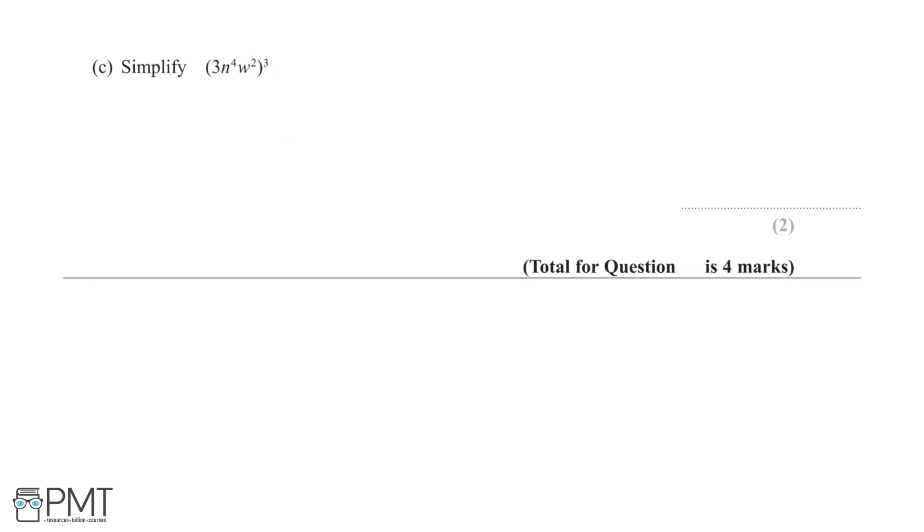We have been asked to simplify (3n⁴w²)³ for 2 marks. We're going to use the rule that if we have (abc)ˣ, this is aˣ × bˣ × cˣ.